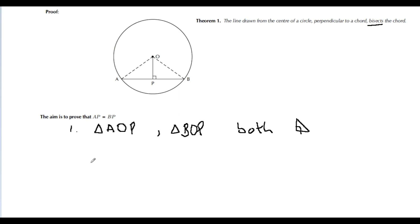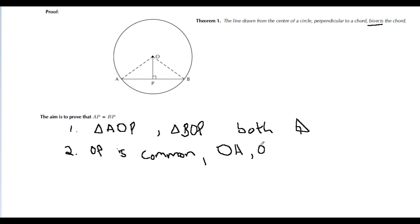Number two: they both have line OP in common. 'Common' just means it's shared by both triangles — it's a line that appears in both. And we also see that OA and OB are radii.